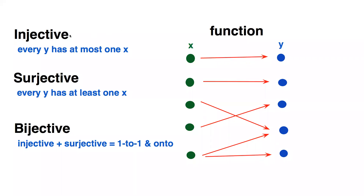This is a discussion of the difference between injective, surjective, and bijective functions. Right now we can see that this is actually not a function because we have one x being mapped to two different y's. It would not pass the vertical line test.